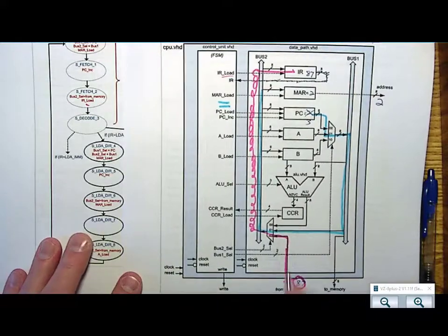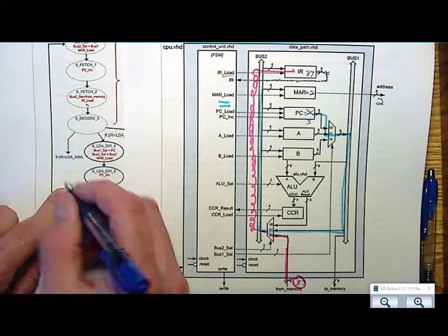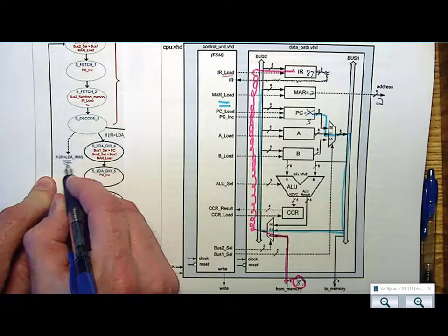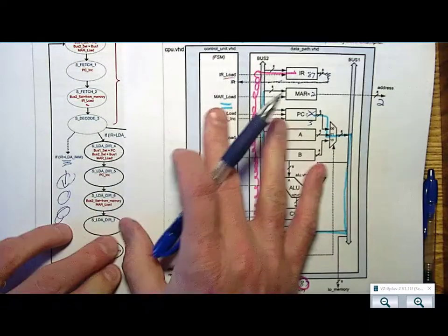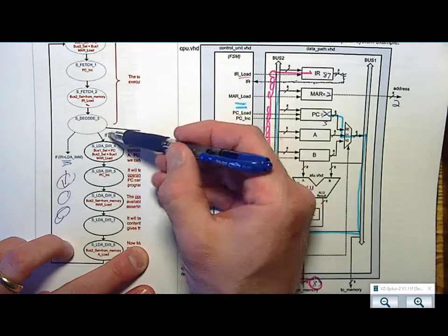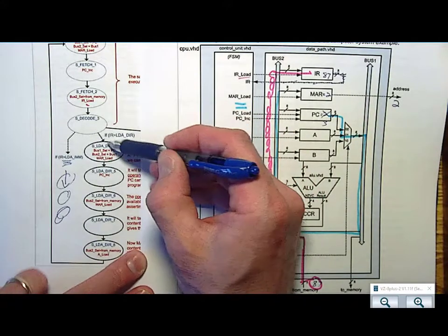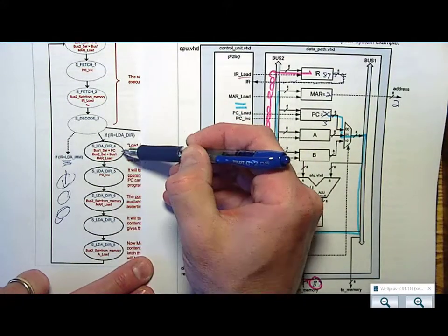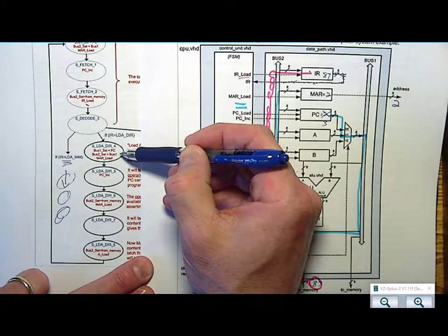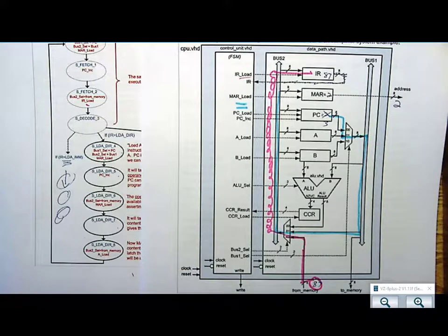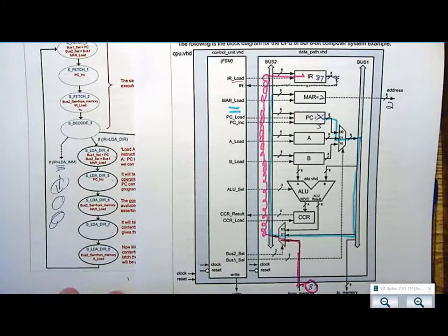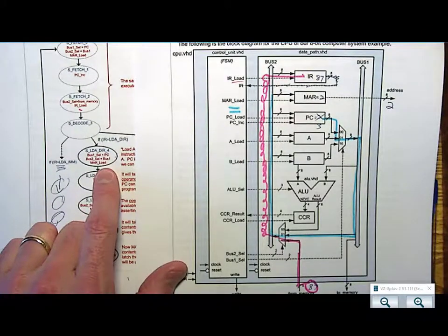Now, you notice that when I draw the state diagram, I had already implemented load A with immediate. It sat down here. Now I make a decision in my next state logic to go down these paths, and this is going to take a few states, 4, 5, 6, 7, 8. So what I need to do is at this moment, I need to go get the operand.